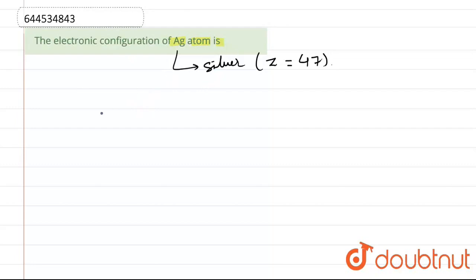If we consider the question, it is saying that the electronic configuration of Ag atom. So, electronic configuration of Ag atom or we can say silver having atomic number 47. If we write its electronic configuration.